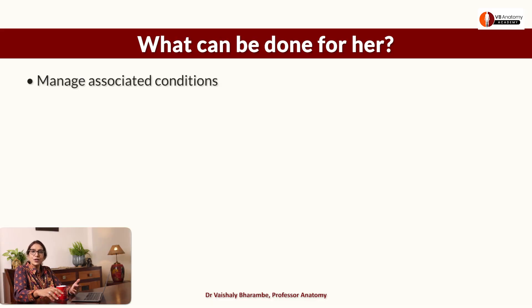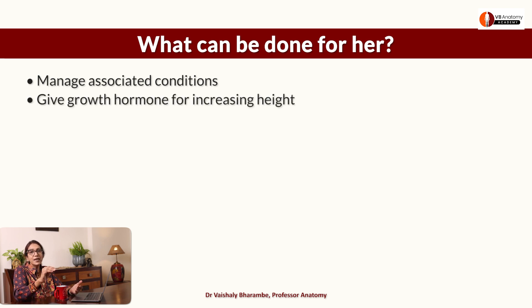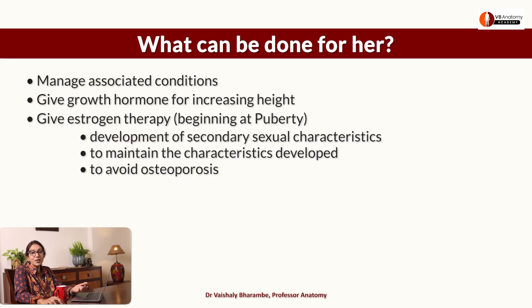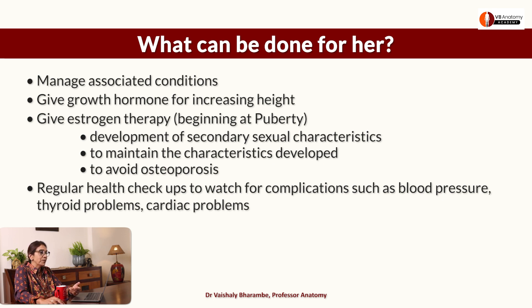She has a chromosomal abnormality present in every cell — you cannot cure it. What can you do for her? Manage her associated conditions: thyroid problems, blood pressure. Give her growth hormones so she grows to a more normal height. Give her estrogen therapy so she develops female characteristics, and the estrogen will also protect her from osteoporosis likely due to lack of estrogen. Regular health checkups will help detect problems early. You can also detect and manage coarctation of the aorta if present.